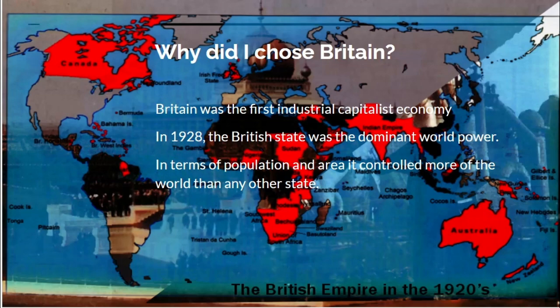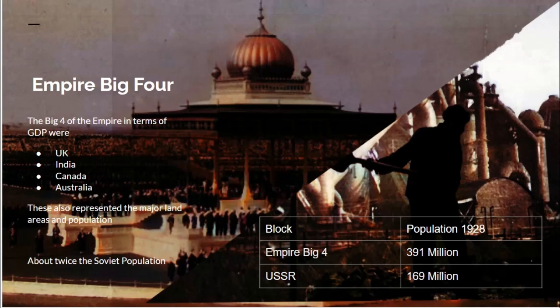That shows the British Empire in the 1920s. Now, there were four economically significant countries in the British Empire: the United Kingdom, India, Canada, and Australia. These represented not only the major economies in terms of GDP, but the major land area and major population of the Empire. Taken as a whole, the economic core of the British Empire was roughly twice as big as the USSR — the Big Four had a population of 390 million, while the USSR at the same time had a population of 169 million, so a bit over twice the size.